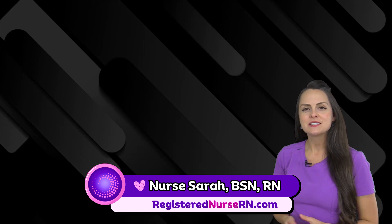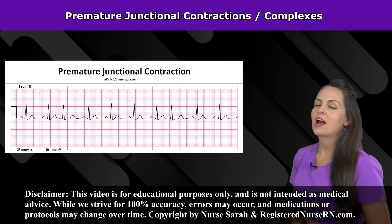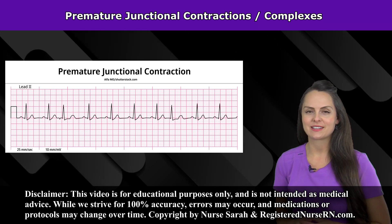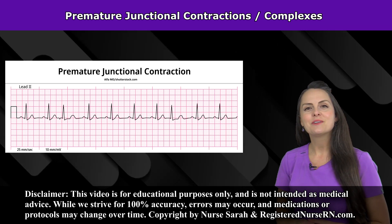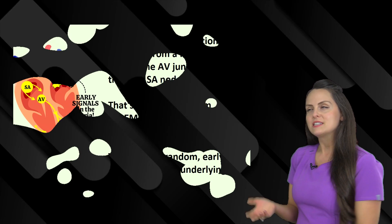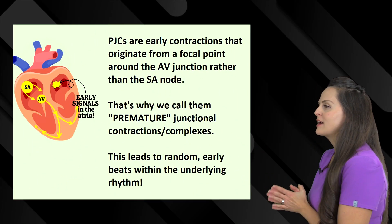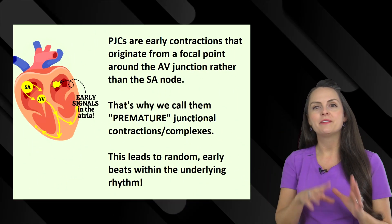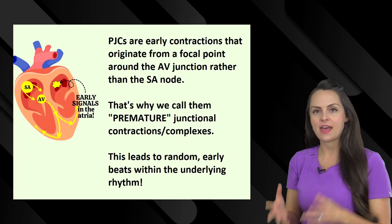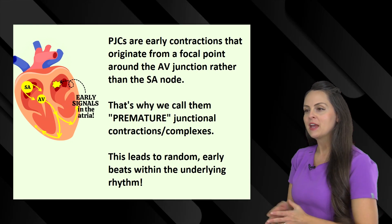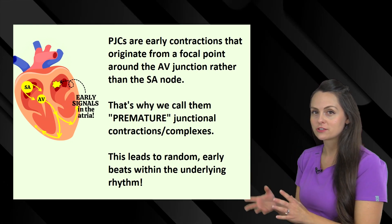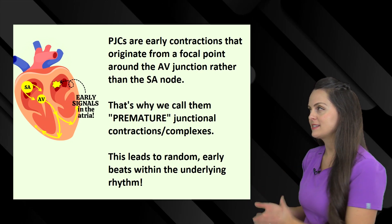Hey everyone, it's Nurse Sarah. In this video, I'm going to be going over premature junctional contractions, also known as premature junctional complexes. PJCs are early contractions that originate from a focal point around the AV junction rather than the SA node. That's why we call them premature junctional contractions or complexes.